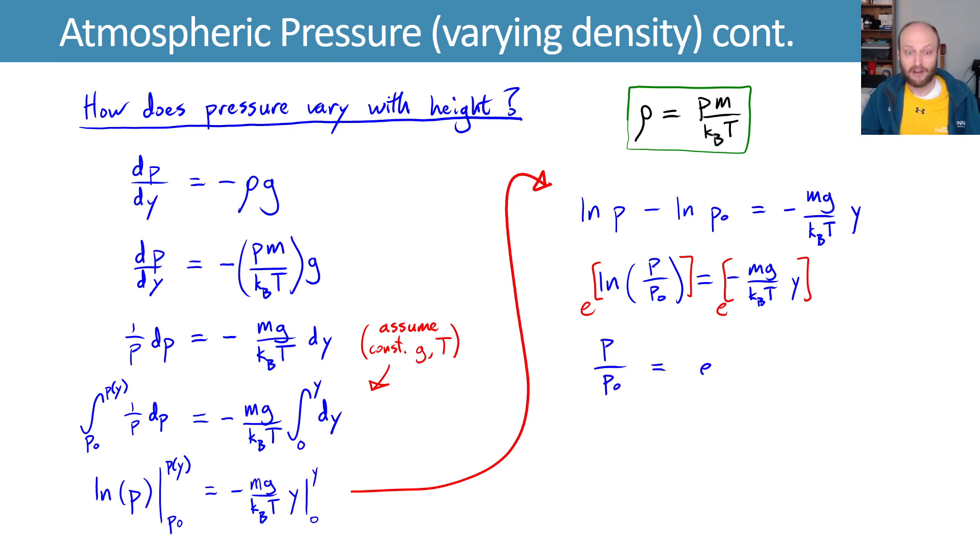Leaving us with p over p₀ on the left and e to the minus mg over kᵦT times y on the right. We can multiply both sides by p₀ and we're left with our pressure dependence on position of this.